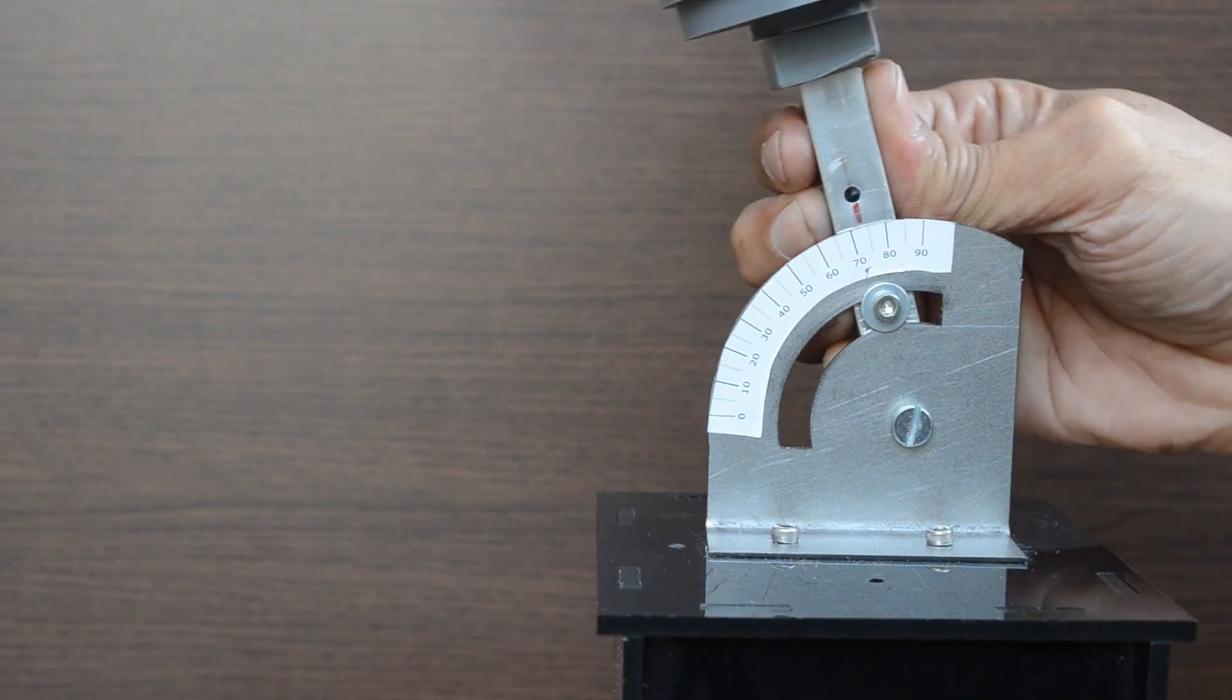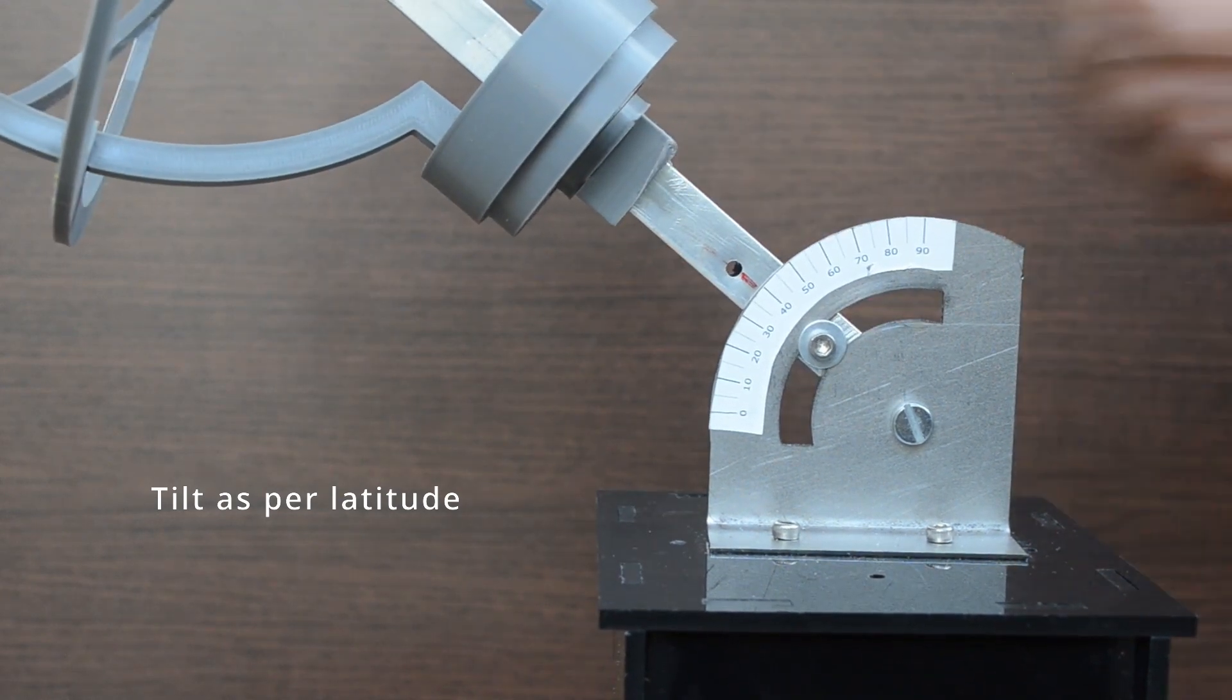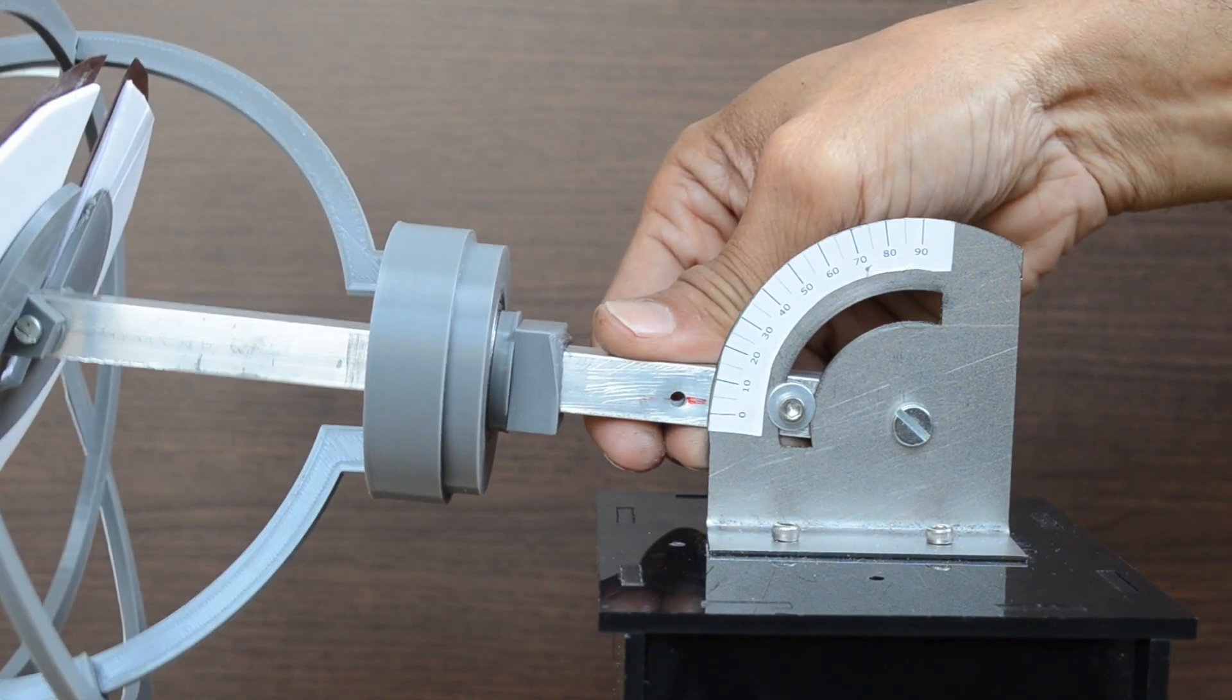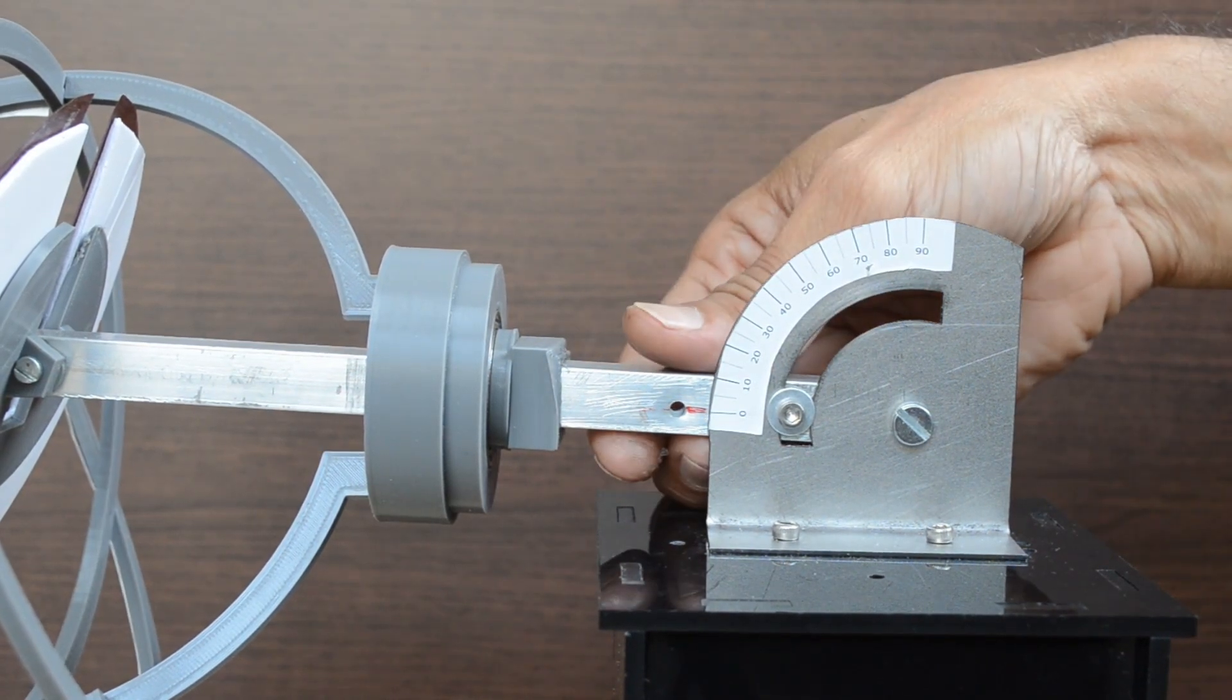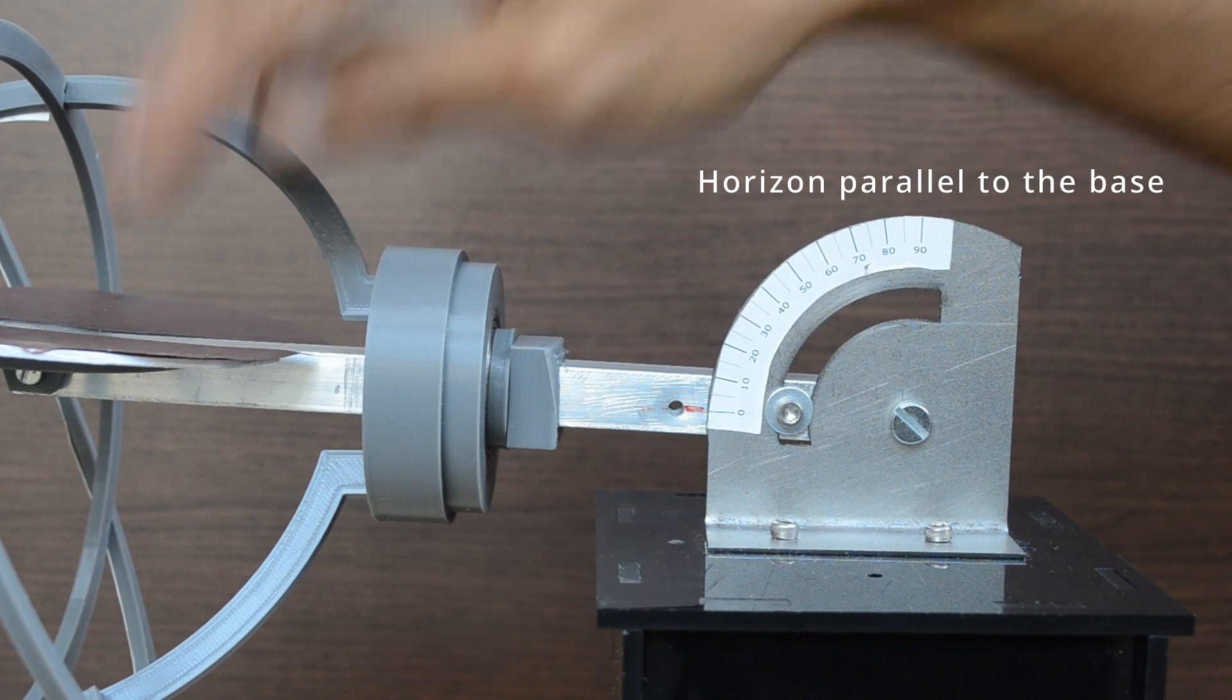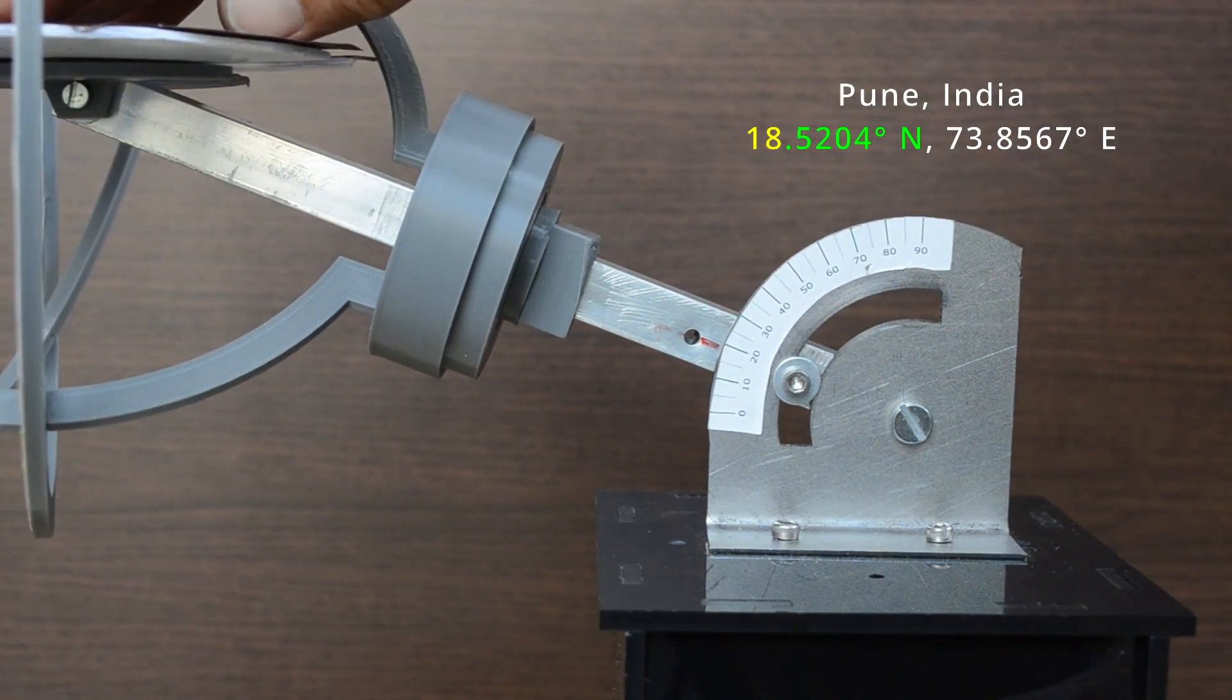The whole sphere can be tilted like this. Platform can be adjusted to remain horizontal after the tilt. Let us tilt the plane for location Pune, India which is at the latitude of approximately 18 degrees north.